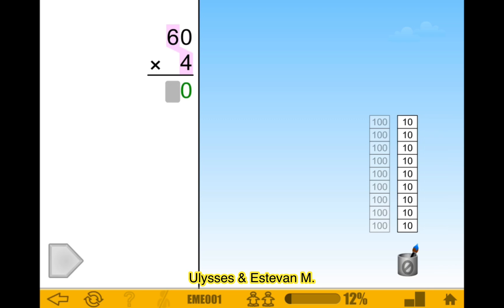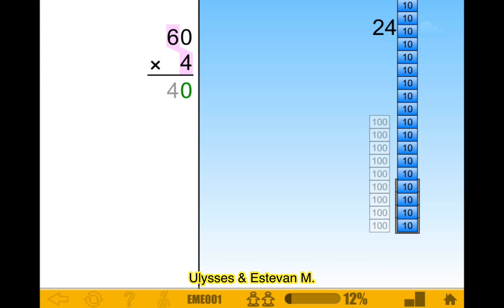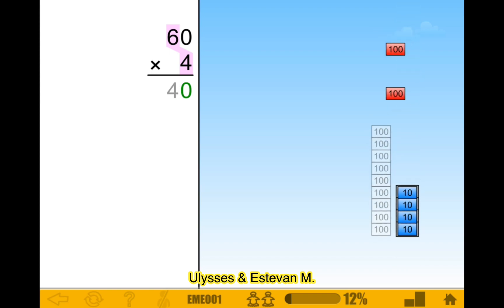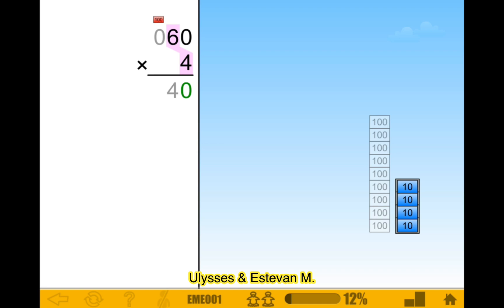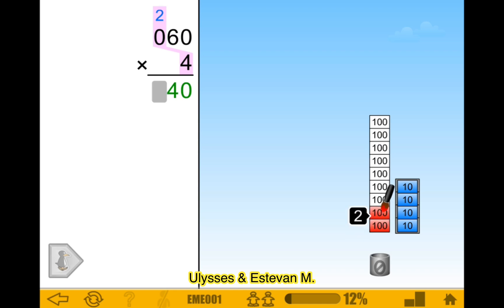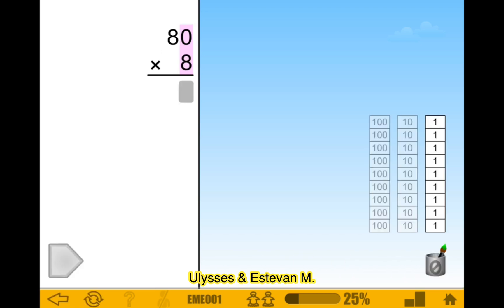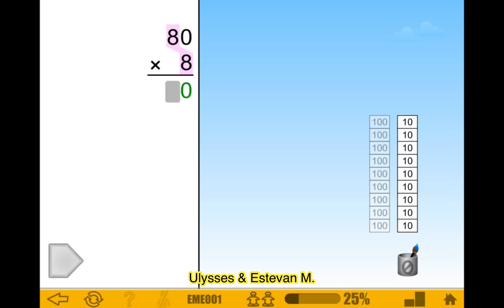So zero, zero. 60 times four is 24 — they put up 4. Oh no, now we need to do the hundreds. 100. Then we need to do 20. So now 60 times 4 is 240.